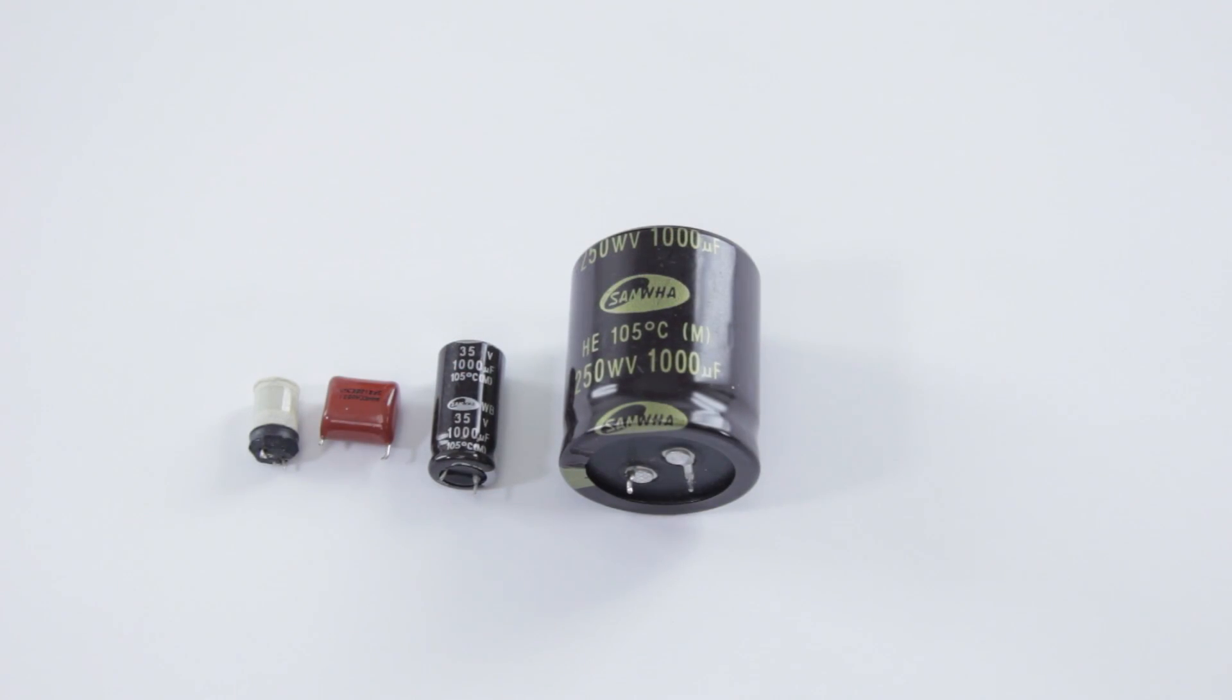The common issues for bad caps tend to be the TV not powering on, the TV powering on but taking multiple attempts. The multiple attempts will probably take more and more as time goes on and the cap starts to dry out even more. Usually once the TV comes on it's going to function normally, but again once you power it off and try to turn it back on, you're going to hit those issues where it doesn't want to start up.